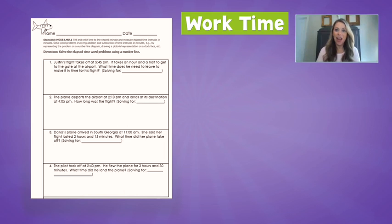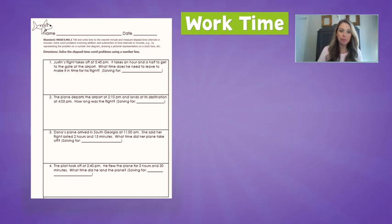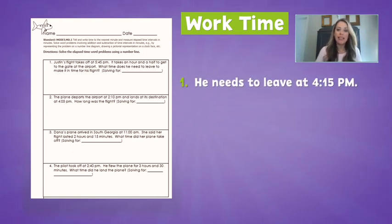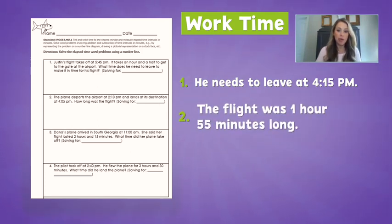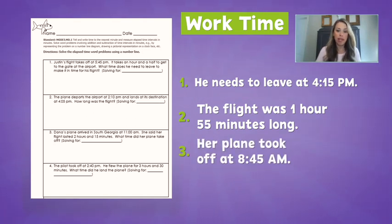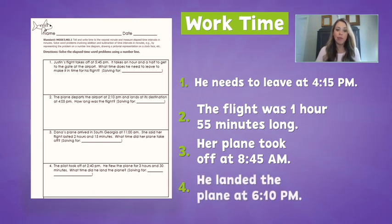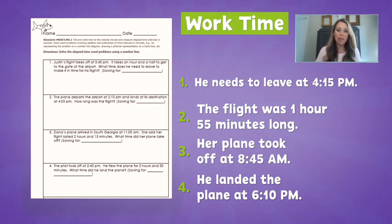Alright pilots, you did a fantastic job navigating those bumpy airways. So now let's check our work. For problem number one, he needs to leave at 4:15pm. For problem number two, the flight was 1 hour and 55 minutes long. For problem number three, her plane took off at 8:45am. And for problem number four, he landed the plane at 6:10pm. I hope you guys did a great job and continue practicing using that number line strategy as you solve elapsed time problems.